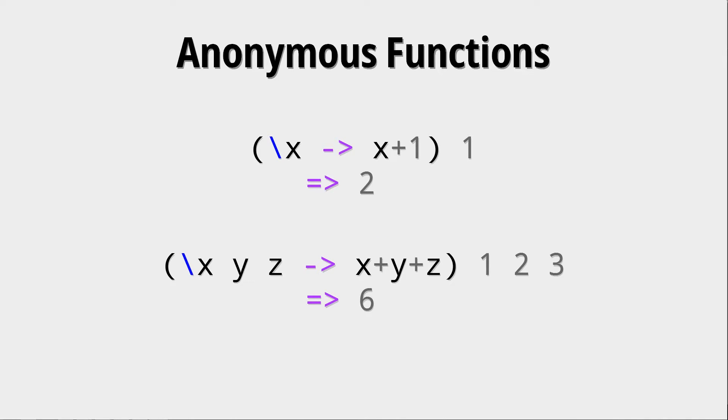Here we can see the application of anonymous functions. In the first example we apply a unary function that increments a number to one, and in the second example we have multiple arguments.